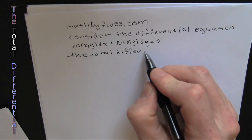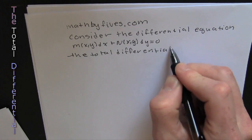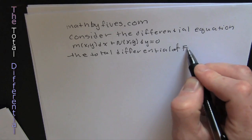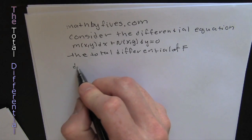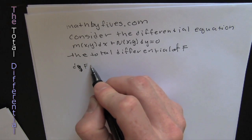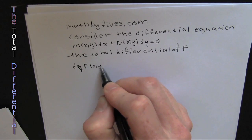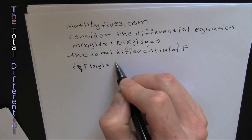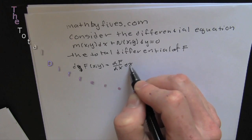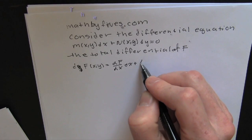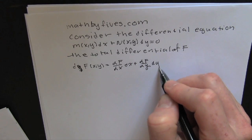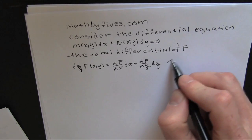Here's the total differential. We're gonna consider the differential equation in its differential form. The total differential of f — of some other function, not necessarily the differential lap — we'll get back to that in just a minute. We're taking the total differential of this function of two variables.